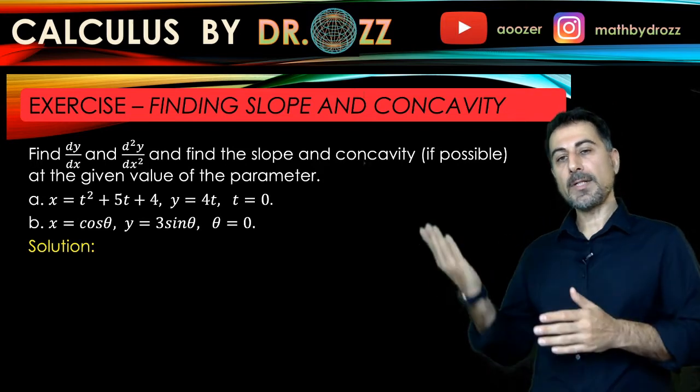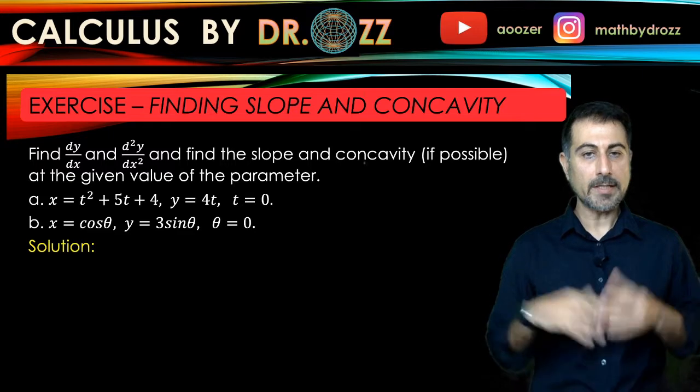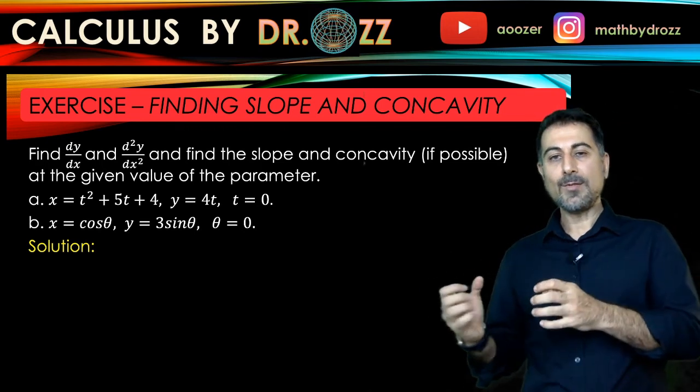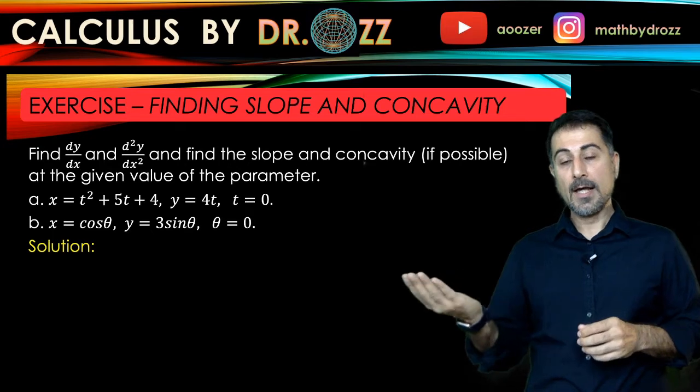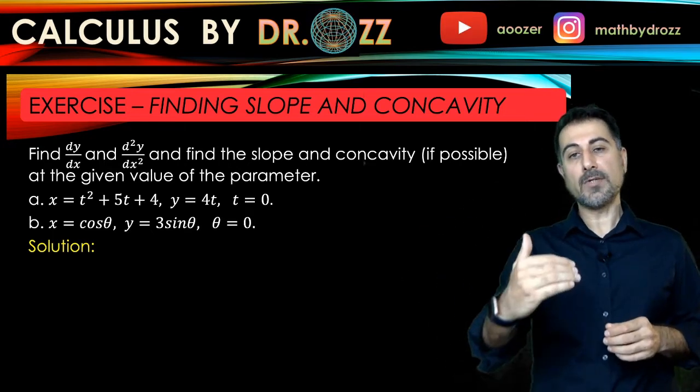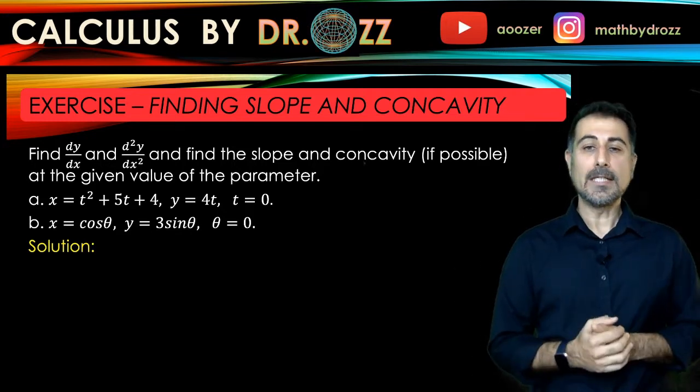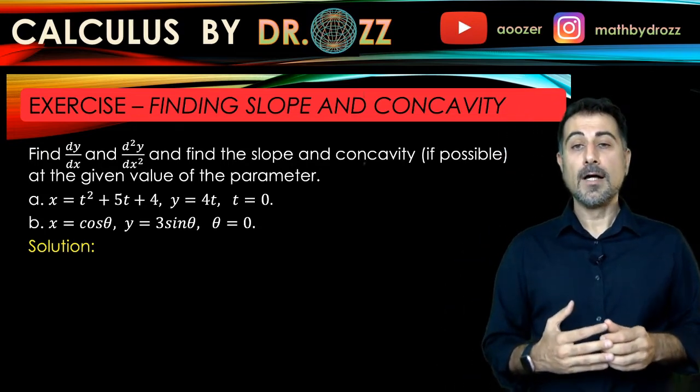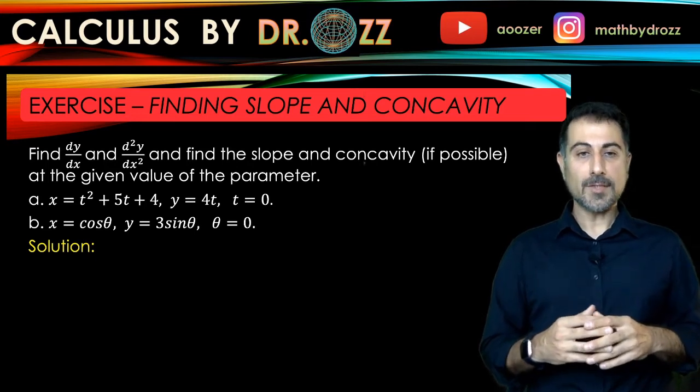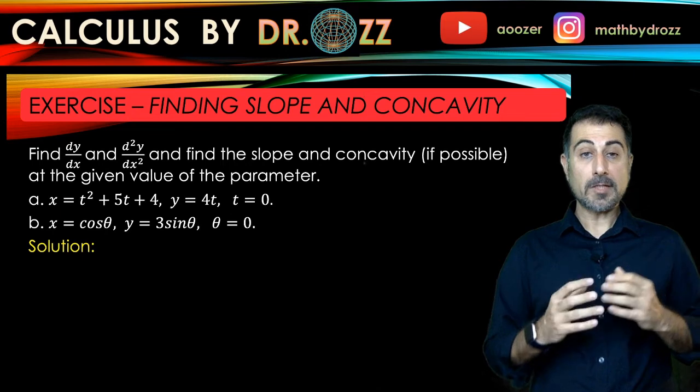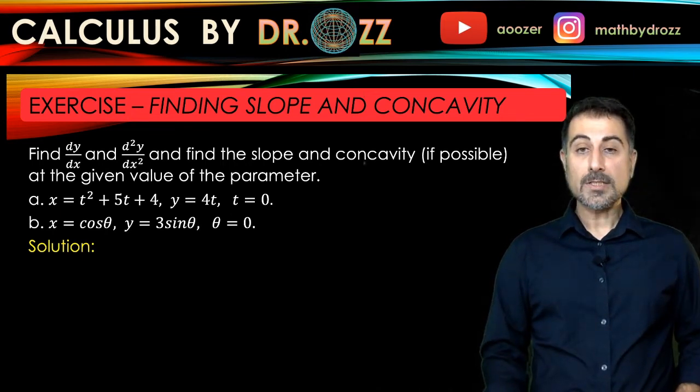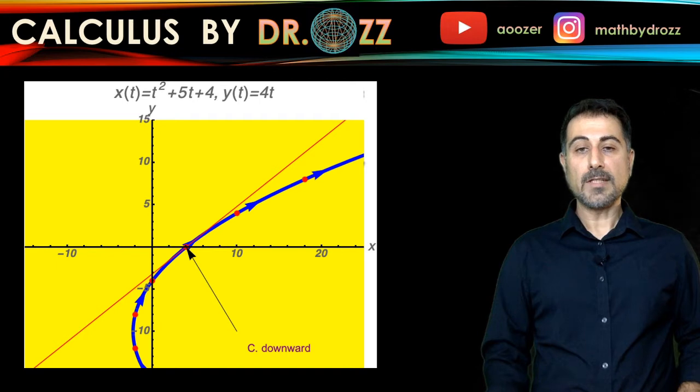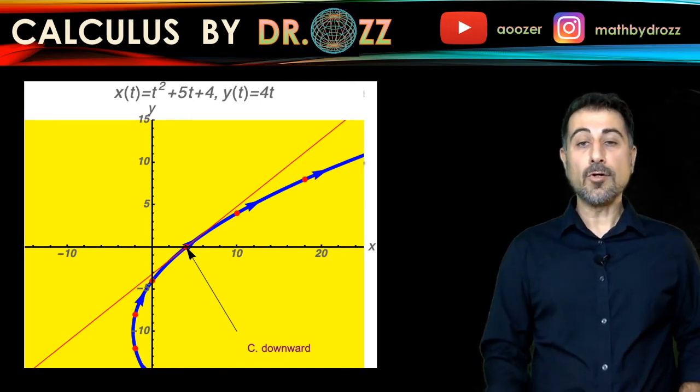And finding slope and concavity was one of the main themes of calculus one, and we spent a lot of time to be able to determine the slope and concavity of the given functions written in the rectangular equation form, which is the standard form y equals f of x. And for that reason, let me talk about dy over dx and d squared y over dx squared. In other words, the first and the second derivative of the function with respect to x.